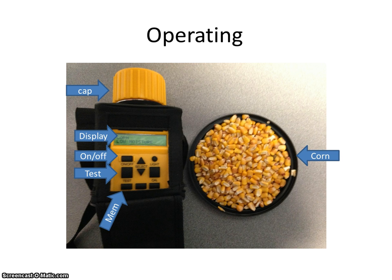It's pretty simple. I'm going to have a moisture meter. You can see there we've got a cap, display area, on-off switch, a test button. We've got a memory button down on the bottom so we can store our values to get an average, and we'll be using corn as our test grain.